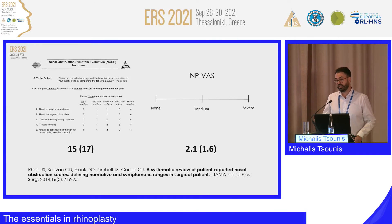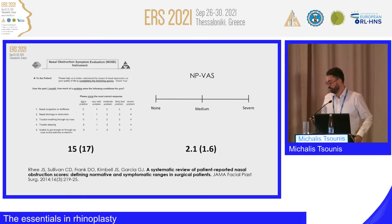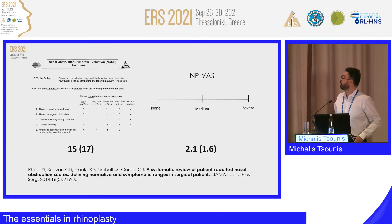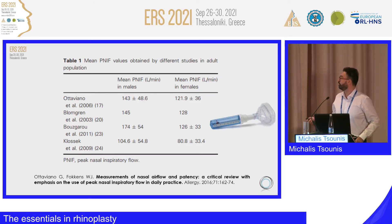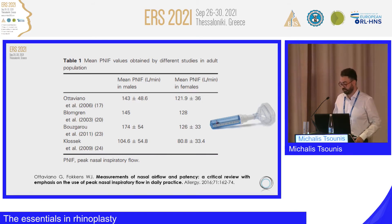An additional conclusion was that the NOSE questionnaire and the visual analog scale are equally useful for assessing subjective nasal patency. For the NOSE questionnaire, the normal score is 15 (SD 17); for the visual analog scale, it is 2.1 (SD 1.6). A table presents normal scores for peak nasal inspiratory flow across different studies, with high variability attributed to the high variety of populations studied.